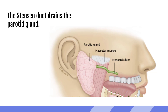Saliva produced by the parotid gland is delivered to the mouth via Stenson's duct. The parotid gland sits in front of the ear, with the sternocleidomastoid muscle down below, and the tail of the parotid gland wrapping around the mandible just a little underneath it. From the superior medial portion of the parotid gland, Stenson's duct travels to the roof of the mouth.